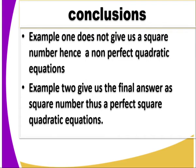Example 1 does not give us a square number, hence a non-perfect quadratic equation. So we are getting a non-perfect quadratic equation. In example 2, the final answer is the same. This one gives me an answer as a square number. That is a perfect square quadratic expression. You can be able to identify now a non-perfect quadratic equation and a perfect quadratic expression.